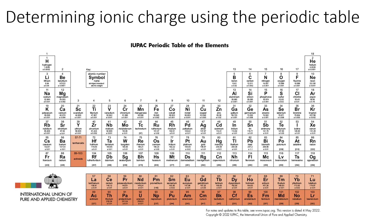Looking at the periodic table: hydrogen has atomic number 1 and mass 1. Carbon has atomic number 6 and mass 12, which tells you it has 6 neutrons. The periodic table tells you a lot about what you're looking for.